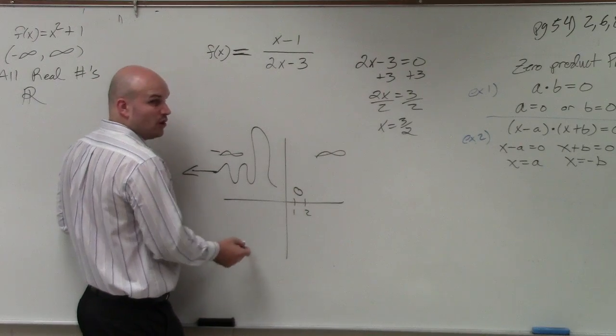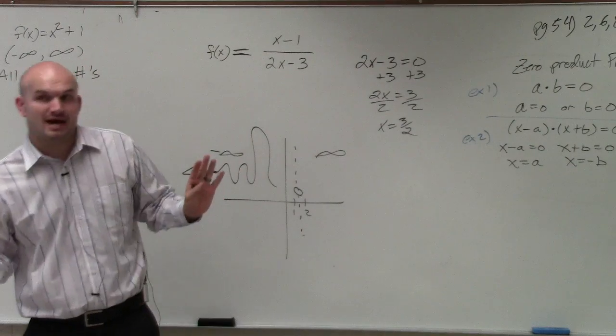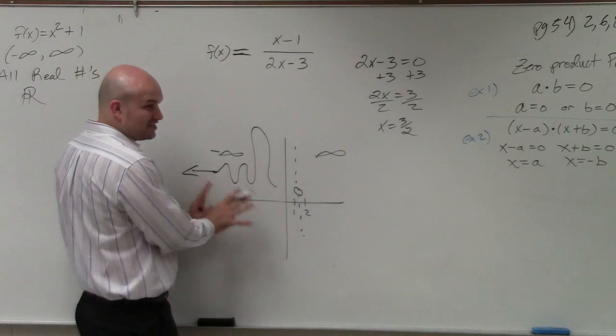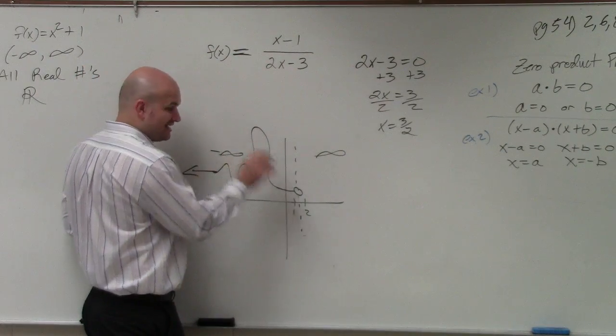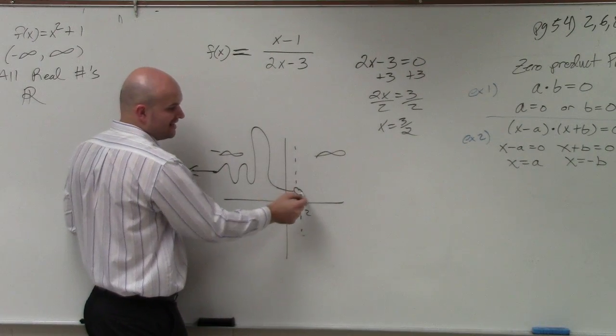At 3 halves, there's either a hole or an asymptote. We don't know what it is right now. We're going to learn about how to determine your asymptotes and holes later. But for right now, you can just say this function is continuous, except it doesn't include the value 3 halves. And then it continues from there.